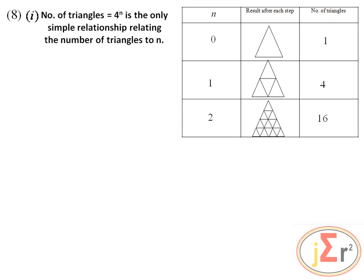The number of triangles is equal to 4 to the power of n. That is the only simple relationship relating the number of triangles to n. Notice that 0 maps to 1, 1 maps to 4, and 2 maps to 16.